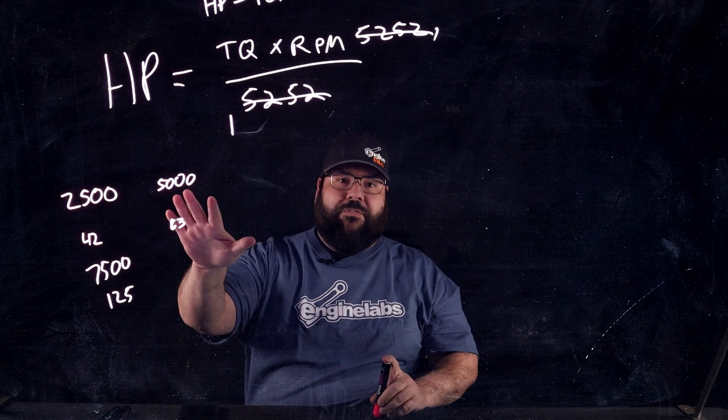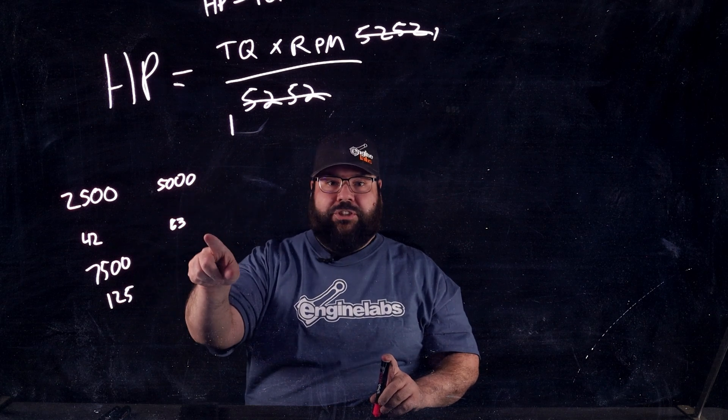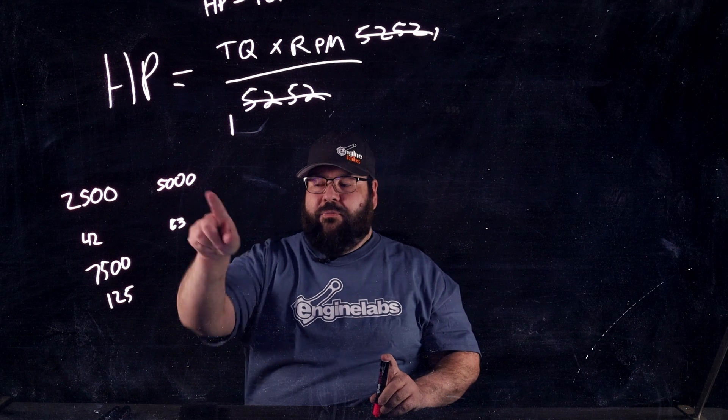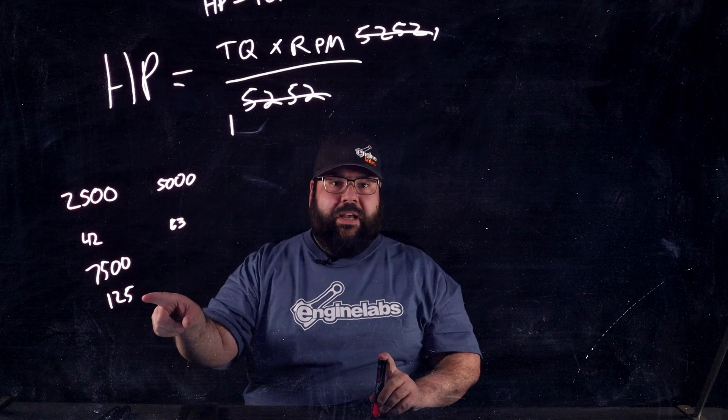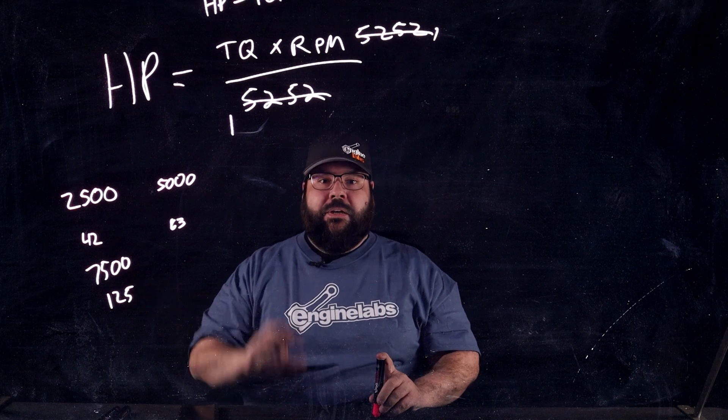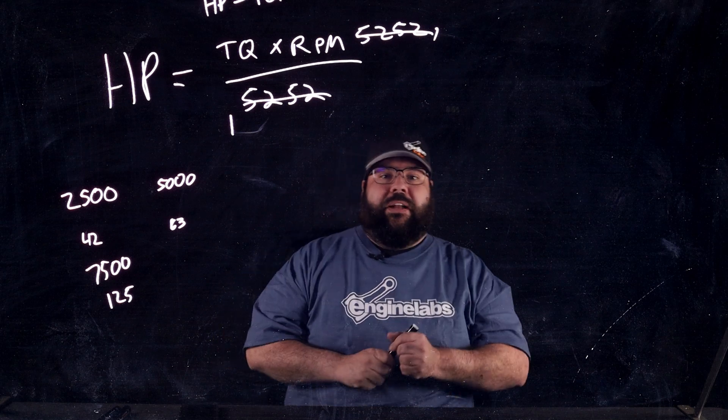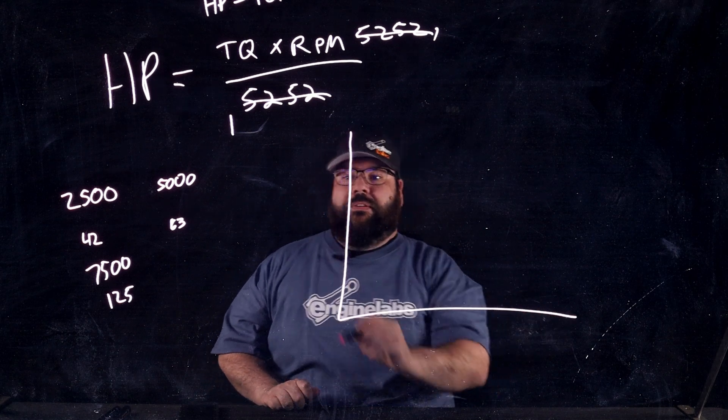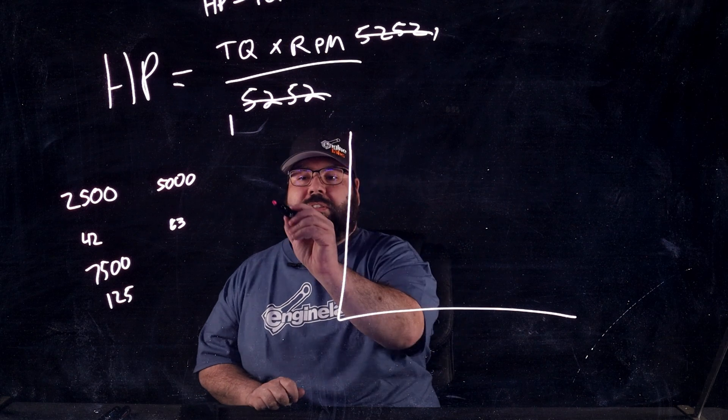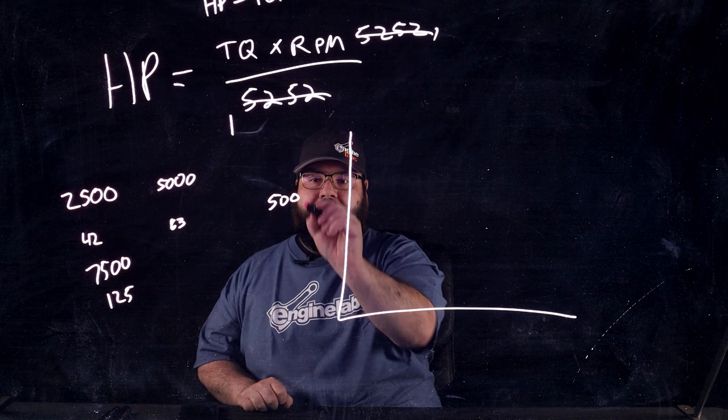So, as you can see, going from 2,500 to 5,000 RPM, if we have the same torque, our horsepower should double. And then going from 5,000 RPM to 7,500 RPM, we're going to increase by about 50%. So, let's go ahead and actually run some numbers and see if that's correct. So, let's go ahead and make believe a dyno graph.